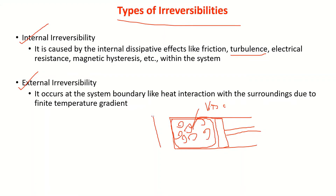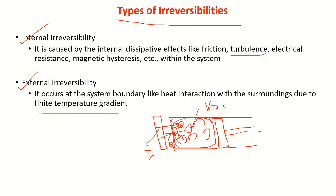External irreversibility: if there is a hot body at temperature T_H and the system is at temperature T, heat transfer from the hot body to the system can occur only if there is a finite temperature gradient. Heat interaction occurs at the system boundary due to this finite temperature gradient. If the temperature gradient is very small, the heat transfer rate is also very small — this does not happen in an actual case, so we must maintain a finite temperature gradient. This is called external irreversibility.